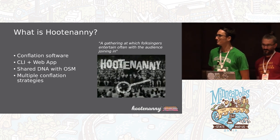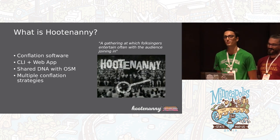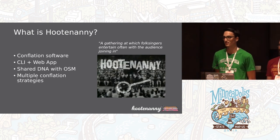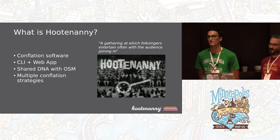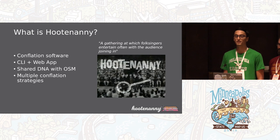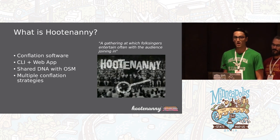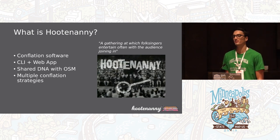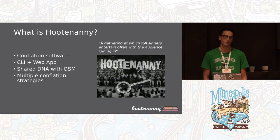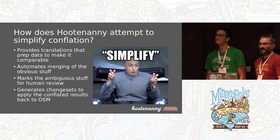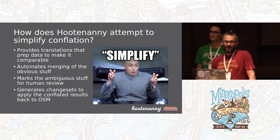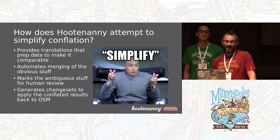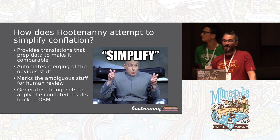So what actually is Hootenanny? It's a conflation software — you give it two data sets you want to conflate, and it gives you the output of what it was able to merge or not merge. We provide that capability via a command line interface and a web application. It simplifies conflation through translations that prep the data to be comparable, automates merging of the obvious stuff, marks the ambiguous stuff for human review, and can generate change sets to apply conflated results back to OSM.